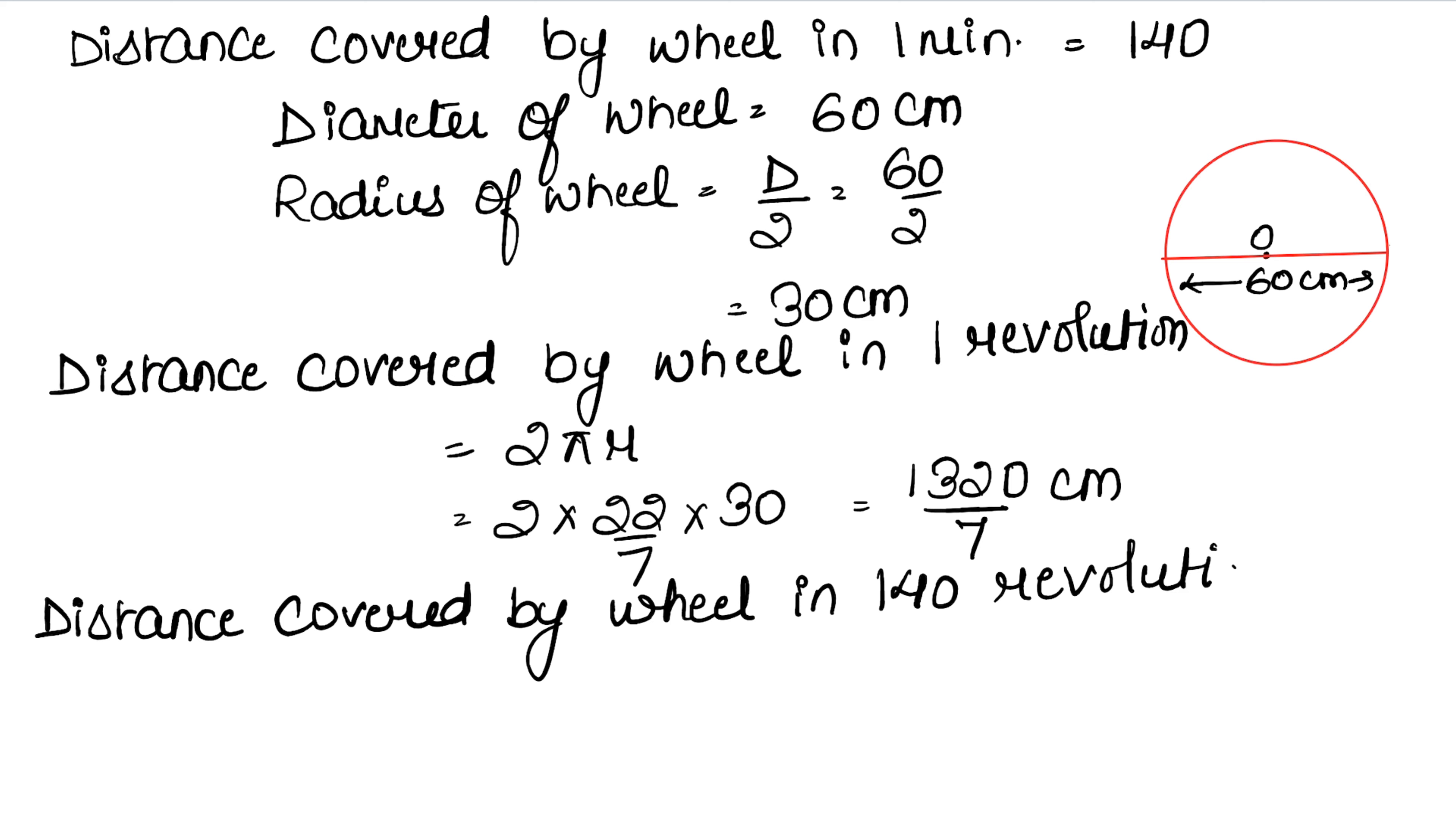For 140 revolutions, we multiply the one revolution value by 140. So 140 times gives us 26,400 cm. In 1 minute we have 26,400 centimeters distance covered.